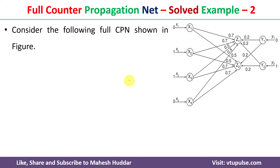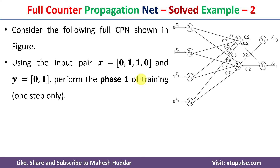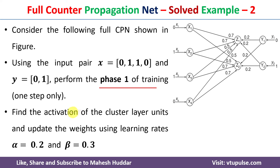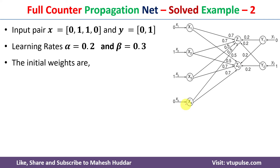This is the full counter propagation net given to us. X and Y are the input pairs: X is equivalent to [0, 1, 1, 0] and Y is equivalent to [0, 1]. We need to perform phase 1 of training and calculate the activations of the cluster layer units z1 and z2. Once we calculate the activations, we need to update the weights using alpha = 0.2 and beta = 0.3 as learning rates.